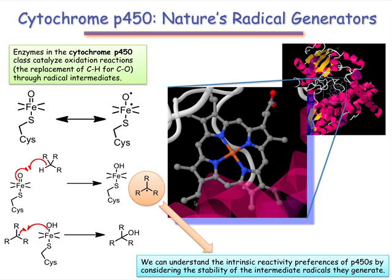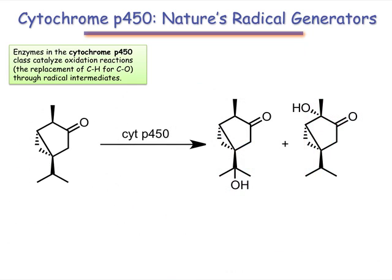For instance, we would expect tertiary C–H bonds to be oxidized more readily than primary C–H bonds, because the corresponding radical intermediates — tertiary over primary — are more stable. The hydroxylation of thujone provides a nice example of this idea. As we would expect, the two unconstrained tertiary positions are oxidized preferentially by cytochrome P450.